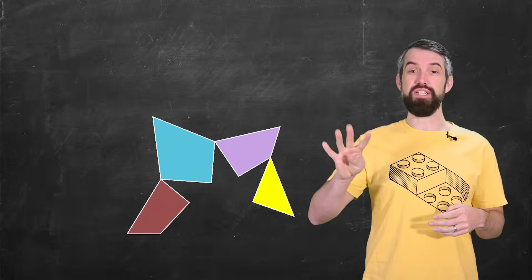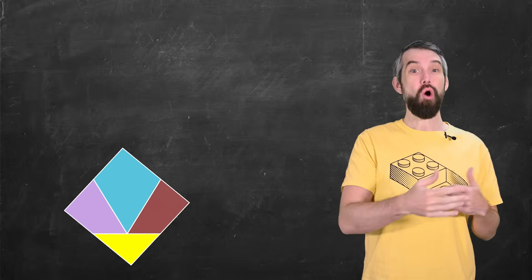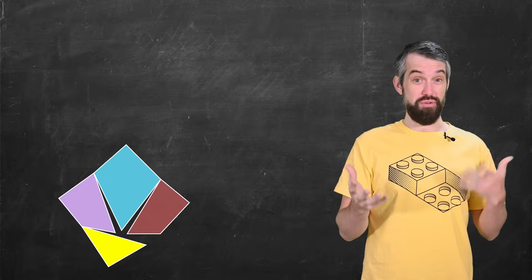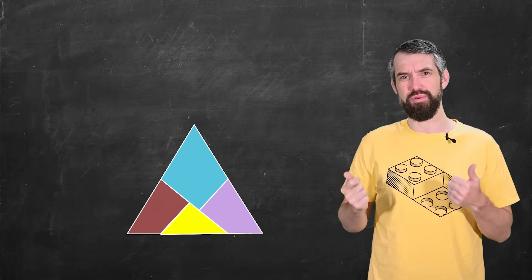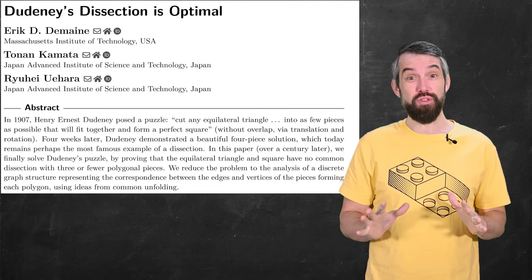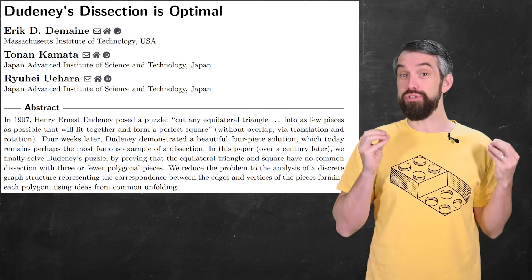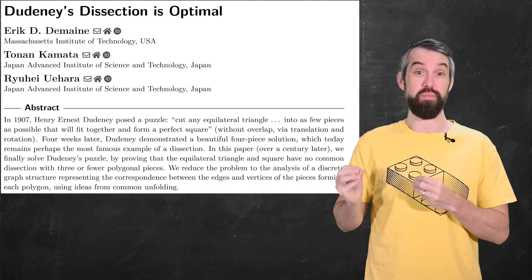But did I really need four pieces to turn the triangle into a square? Could I have done it in less? Over a hundred years after this question was first posed and the four-piece solution was first discovered, a brand new paper has answered the question that no, you do need at least four pieces.